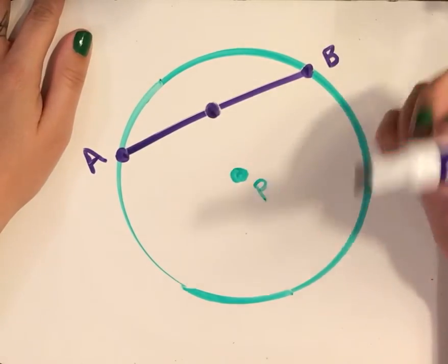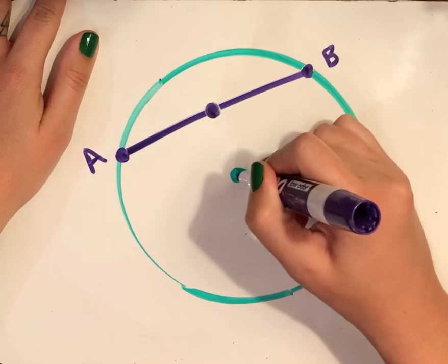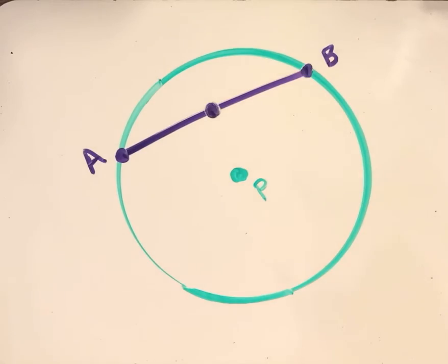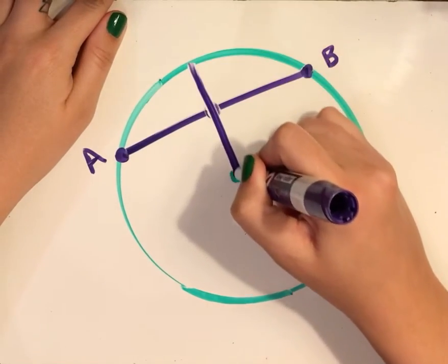This could be a radius or a diameter that connects from point P, the center, through that midpoint of this chord. So when I create that,